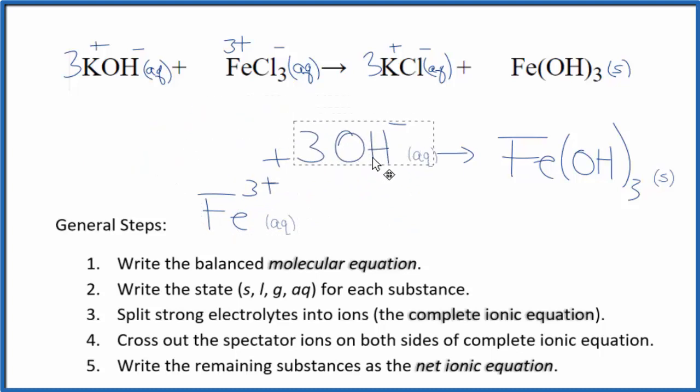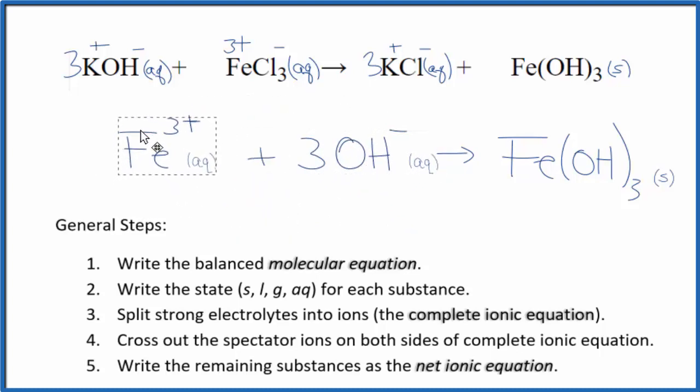Often you'll see the positive ion first in these net ionic equations. It doesn't really matter. It's the same thing. Maybe it looks a little nicer. And that's it. This is the balanced net ionic equation for KOH plus FeCl3. And this is Dr. B. Thanks for watching.